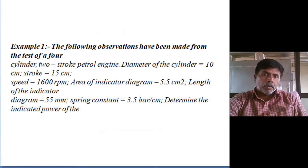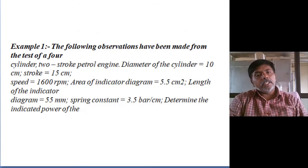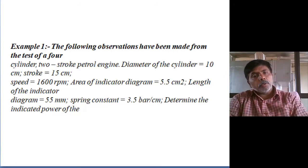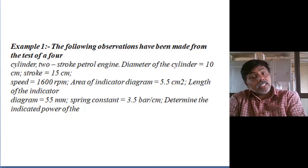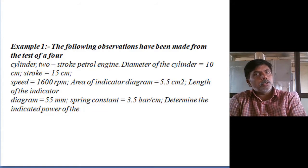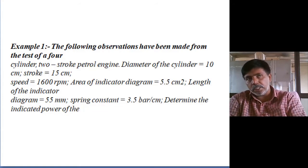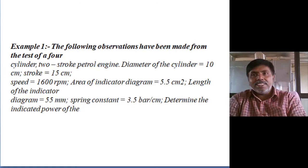We will solve one small problem to get a clear idea about how to calculate the indicated power. The following observations have been made from the test of a four-cylinder, two-stroke petrol engine. So small n equals capital N, because number of revolutions equals number of power strokes — in a two-stroke engine, every revolution gives a power stroke. The number of cylinders is four.